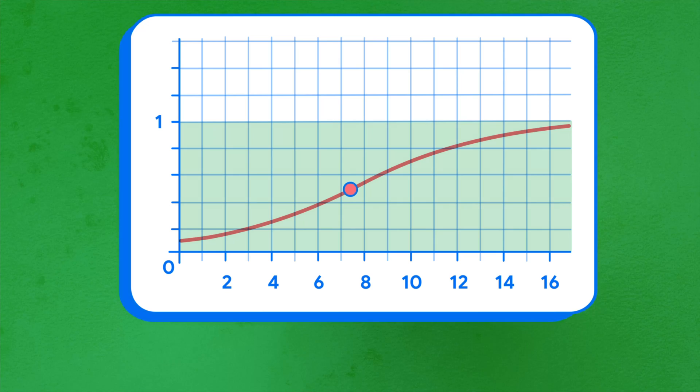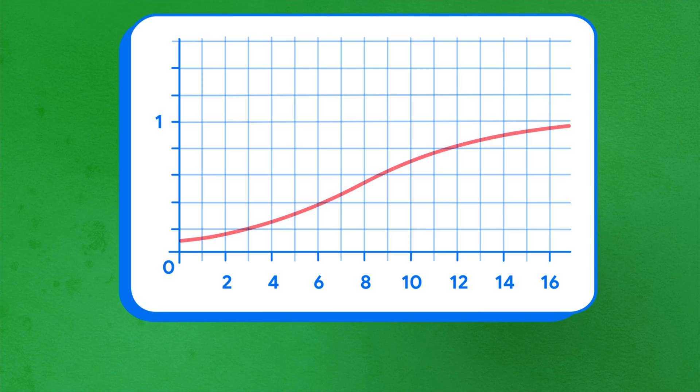As the input decreases to negative infinity, the output approaches 0, and as the input increases to infinity, the output approaches 1. This curve is called a sigmoid, one of a family of S-shaped curves called the logistic functions, from which logistic regression gets its name.